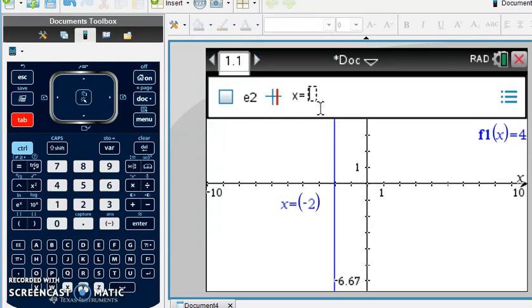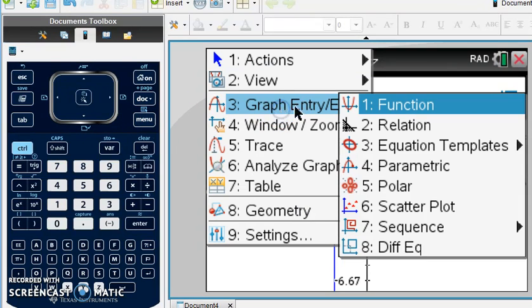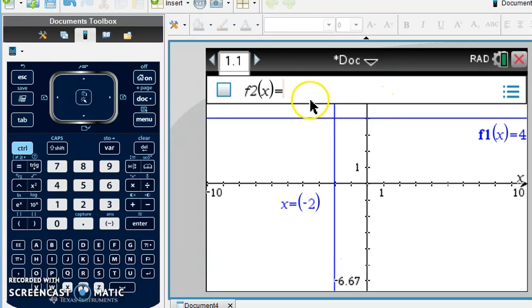So there's a couple ways to change it back. But the easiest one is just to go under menu, graph entry, and change it back to function. And when you do that, it will change back to the f of x notation that you wanted.